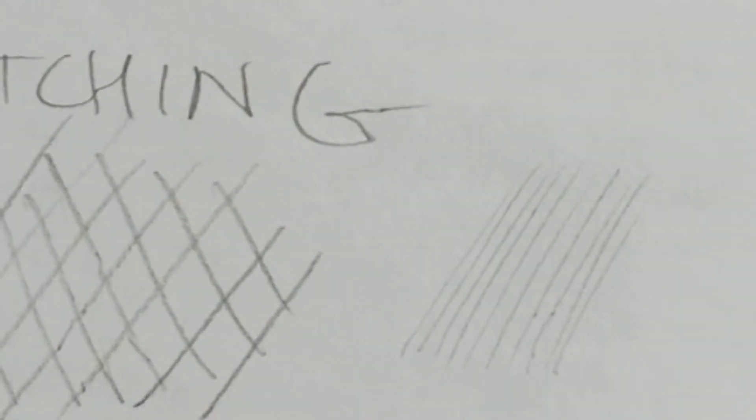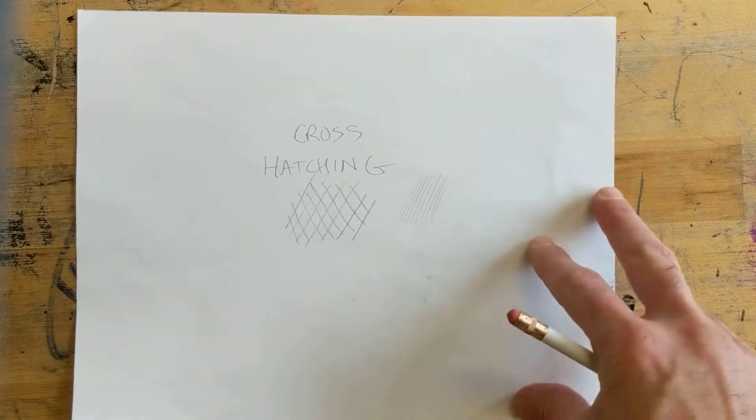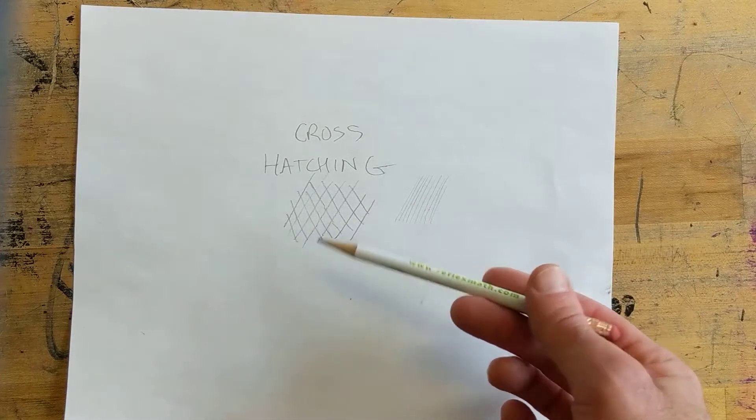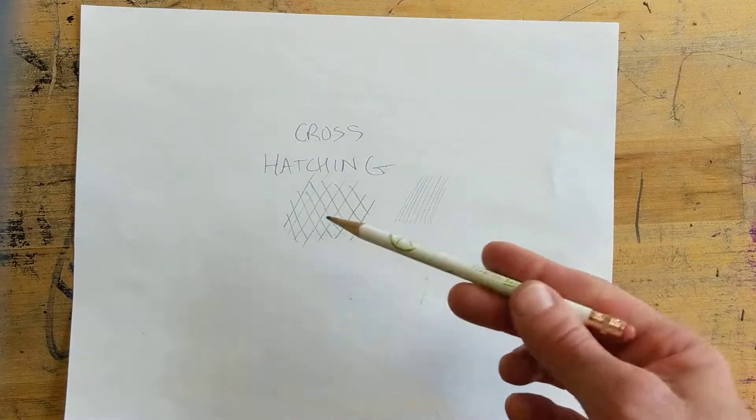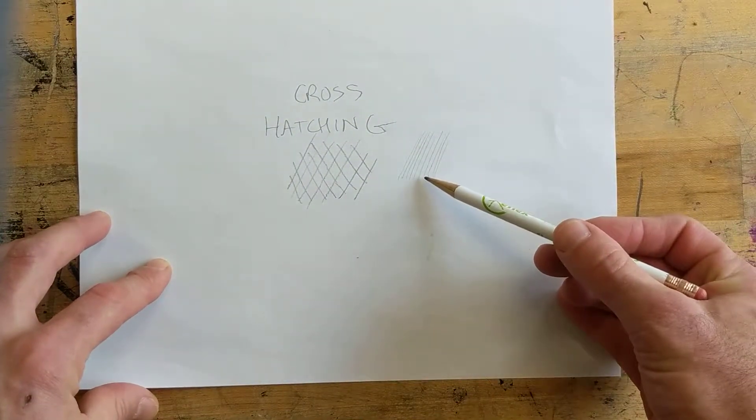The reason why we do this is because when we zoom out all the way, you can see that these lines start to blend together. These lines, you can still see the spaces and they're never going to look like shading.